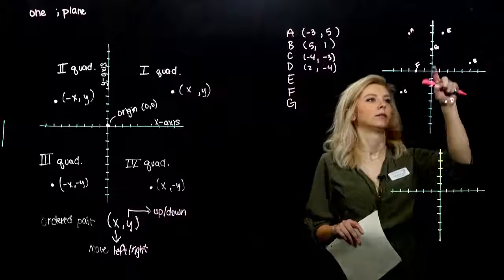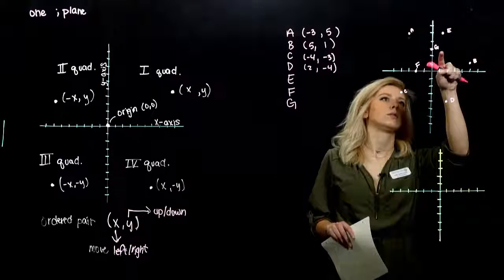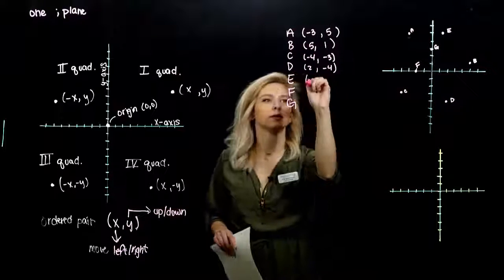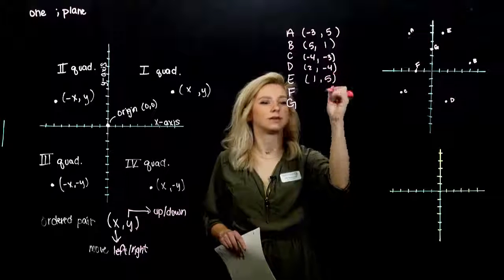E, what are we looking at? Over one, up one, two, three, four, five. So x first, y second.